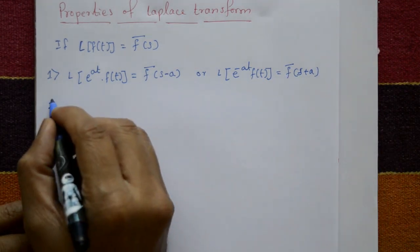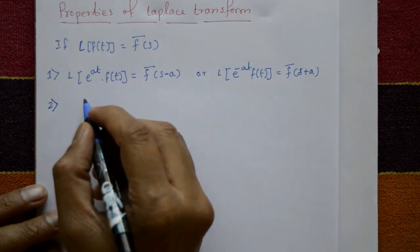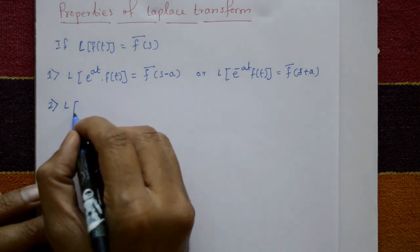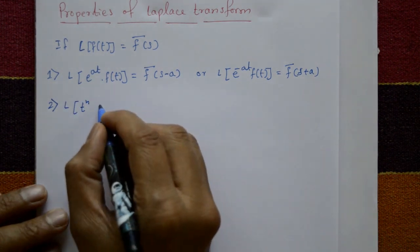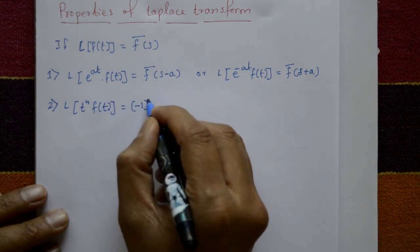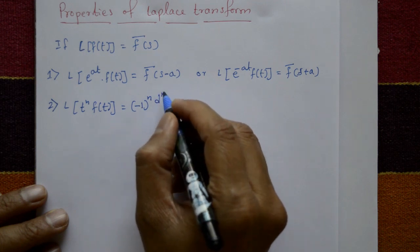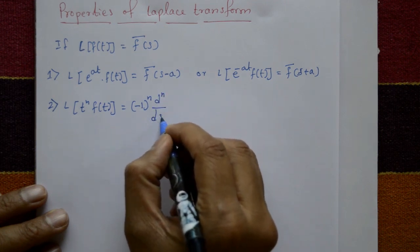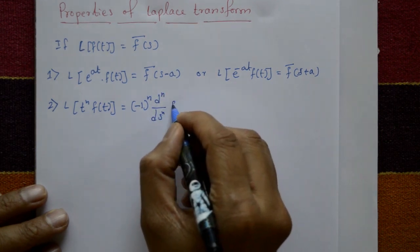The second property is: Laplace of t^n times f(t) is equal to (-1)^n times d^n/ds^n f̄(s). This property is called the derivative property.